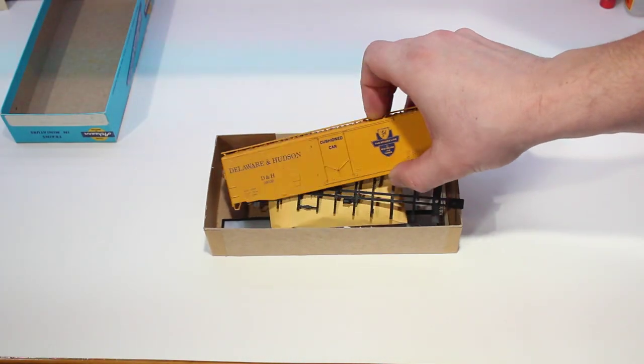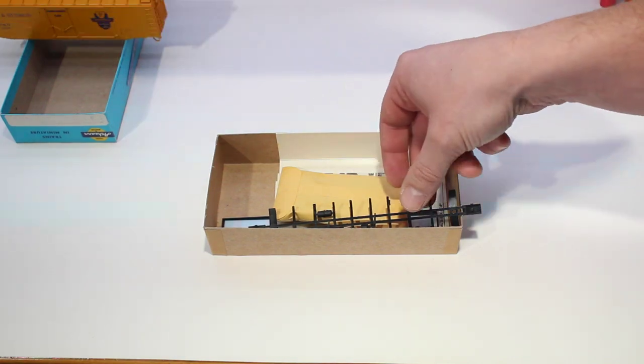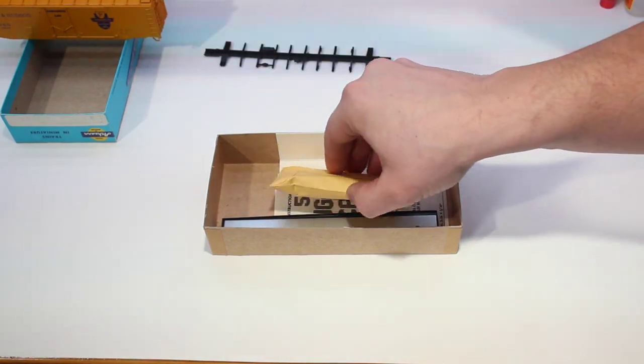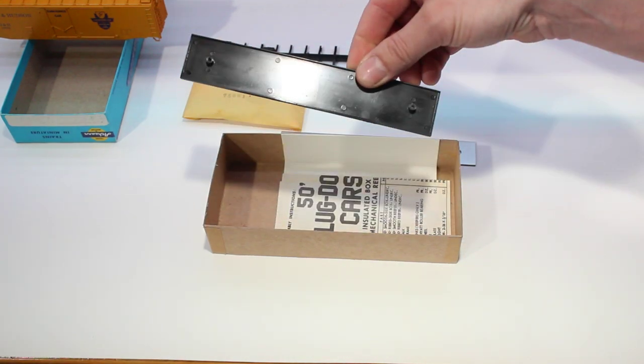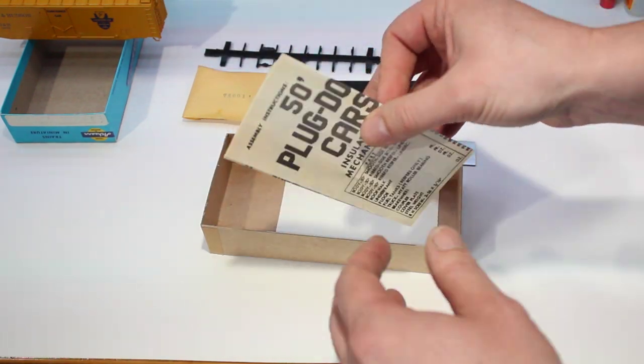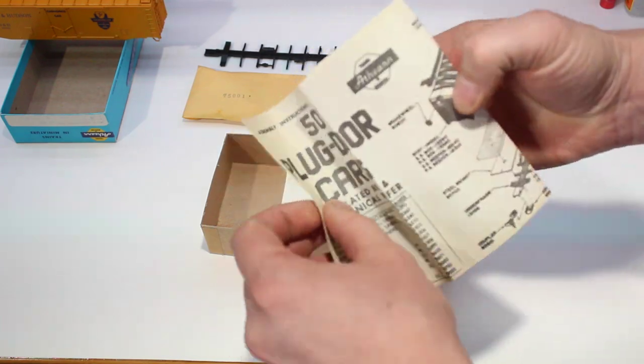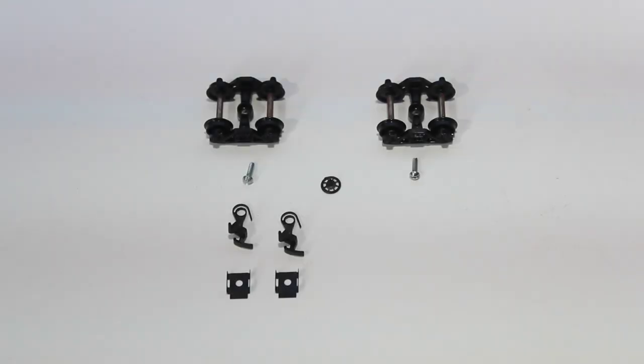When we open up the box, we're gonna have the body, the underframe, a bag of parts, a weight, and the floor. Don't forget the instructions.